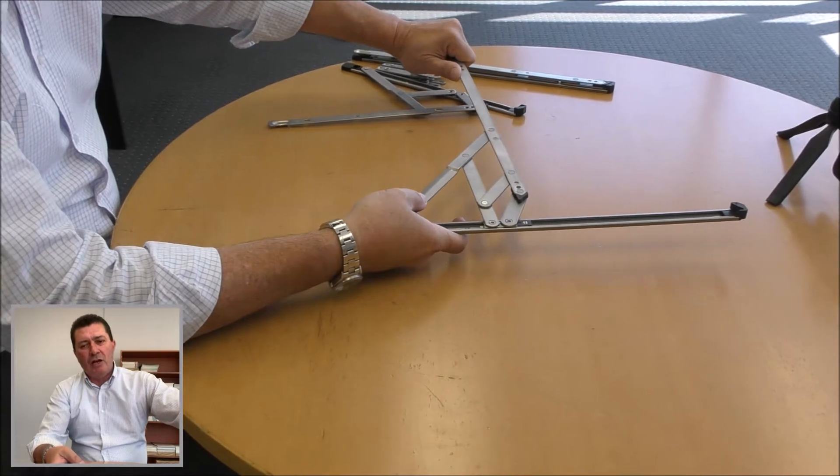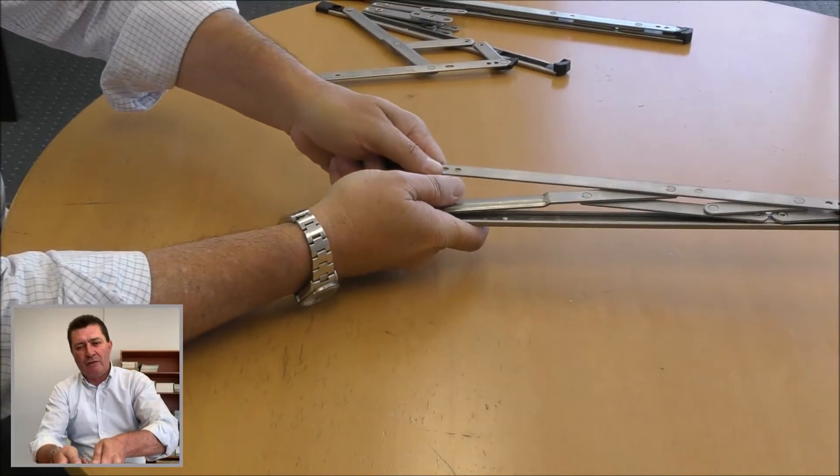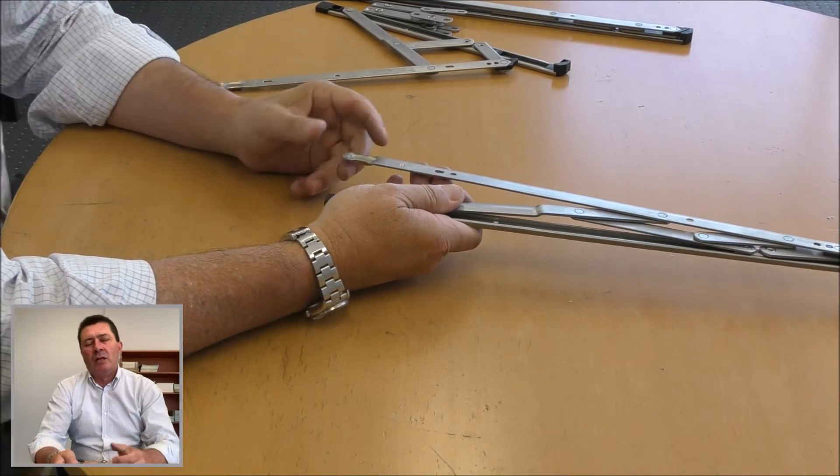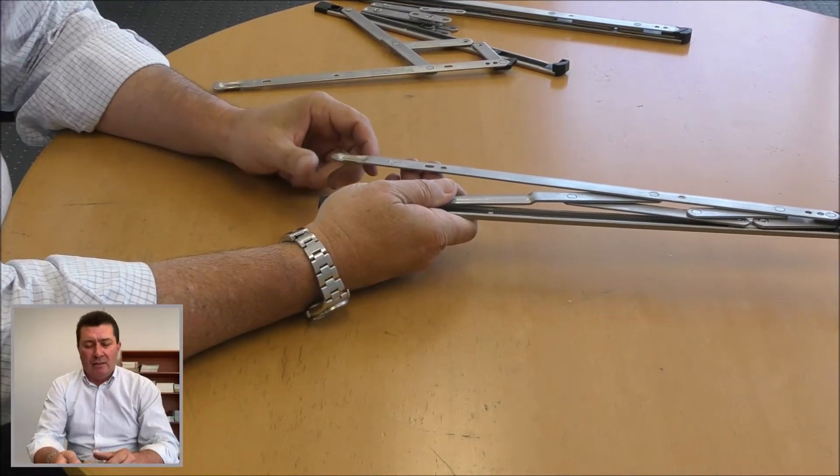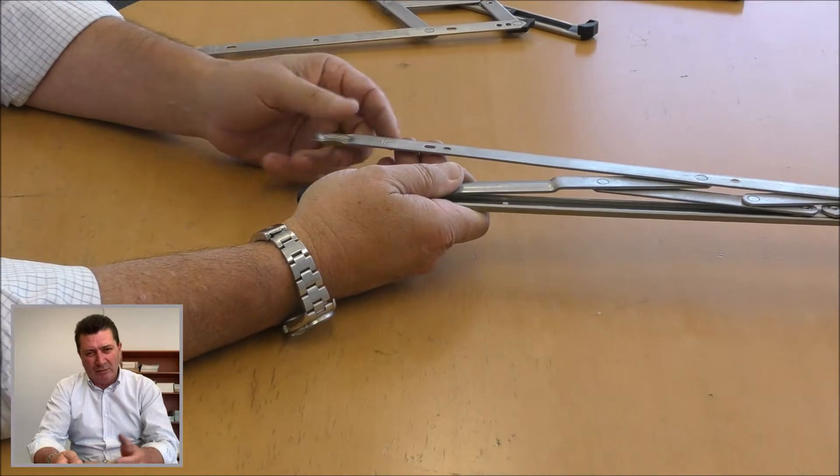So as it closes, it's not square to the frame and will foul at one end, and you'll get complaints from your customers.